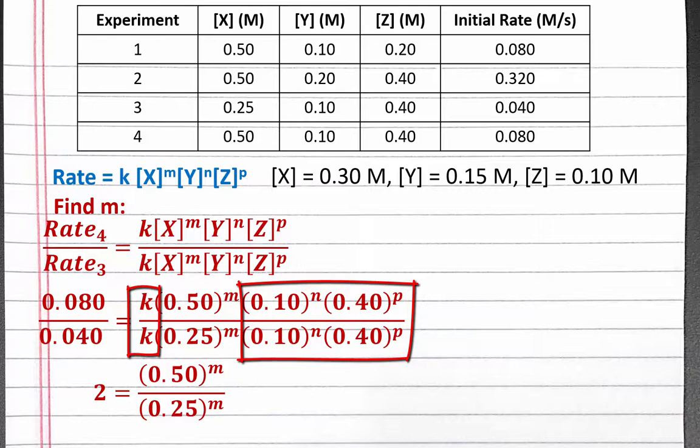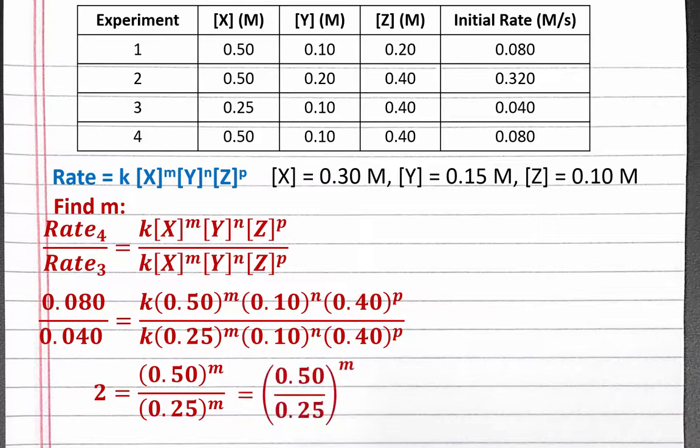We're left with just the ratio of the initial concentrations of X raised to the m power. To solve this, since both concentrations are raised to the m power, we can bring the fraction inside the parentheses and raise it to the m power. Simplifying the fraction, we see it is 2 raised to the m power. Although we know m is 1 just by looking at this equation, let's solve this all the way using math, in case the numbers don't turn out so easily in other problems. To solve for m, we need to take the log of both sides.